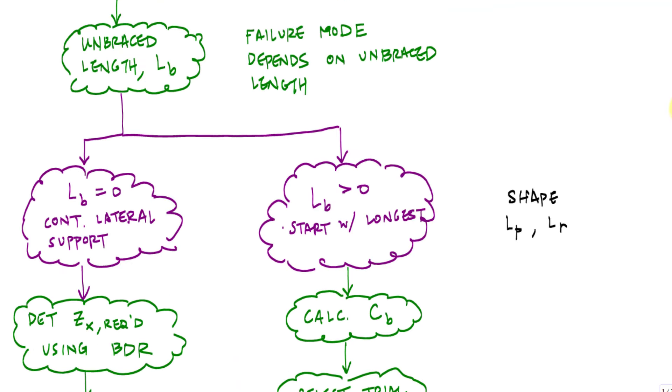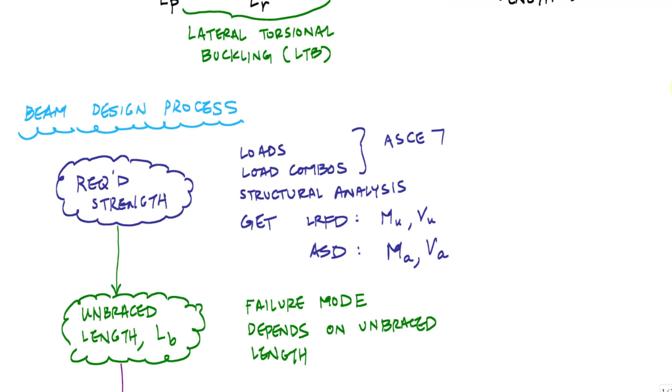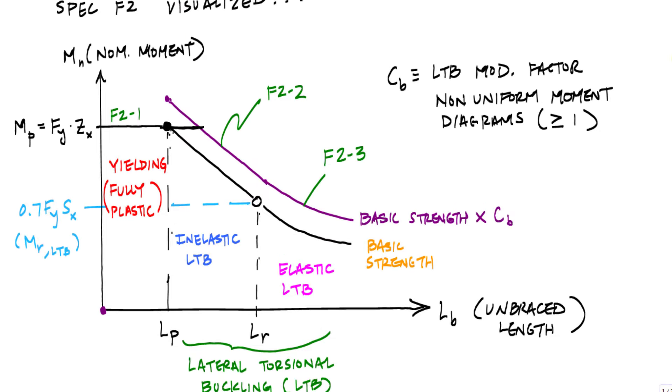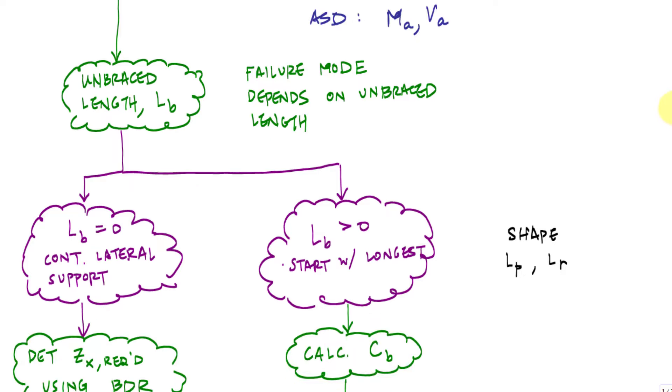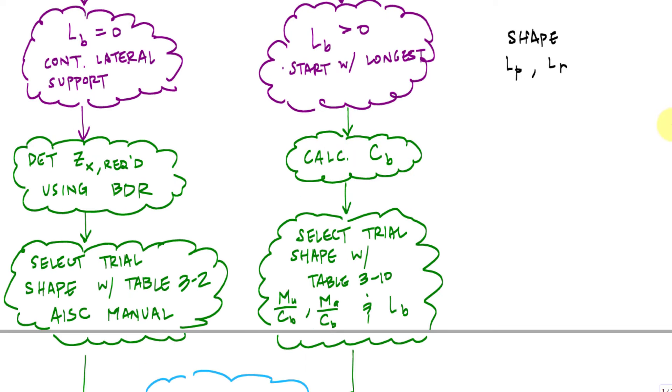We've gone over the entire process. I've provided you with an overview of this beam design process based on spec F2. We're going to take a closer look now at these paths here, which are really dependent on the unbraced length. In particular, let's start with the simpler case where the unbraced length equals zero. And what do we mean by determine the plastic section modulus required using the BDR?